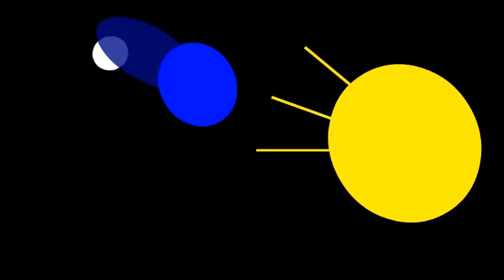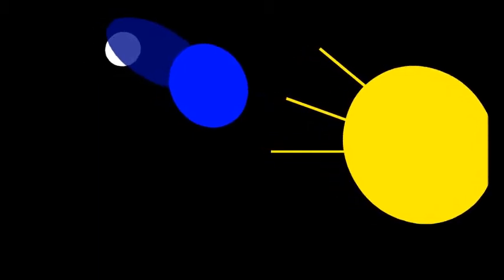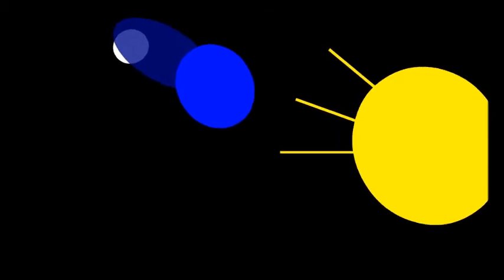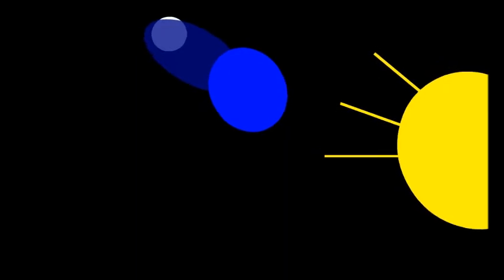The size of your shadow changes based on the position of the Sun in the sky over you. In the same way, the length of the Earth's shadow varies by about 23,000 kilometers due to the variable distance of the Earth from the Sun.